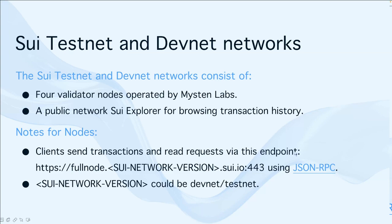As DevNet and TestNet are the most used networks by developers in their daily work, you should be familiar with both of them. The TestNet and DevNet network consists of four validator nodes operated by Mysten Labs, and also a public Sui Explorer for browsing transaction history. Clients can send transactions and read requests via this endpoint, and the Sui network version can either be the DevNet or the TestNet.